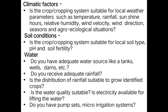The next important factor is soil conditions. The farmer must assess whether the crop or cropping system is suitable for the local soil type, the pH of that soil, and the fertility status of the soil.